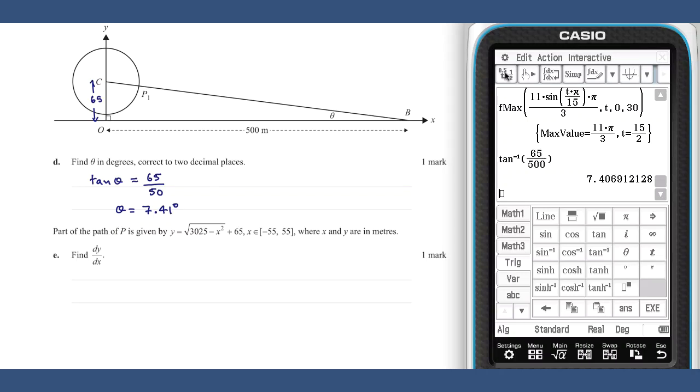Part E. The path of the ferris wheel is now re-expressed in terms of a new function, the derivative of which can be found on our class pad.